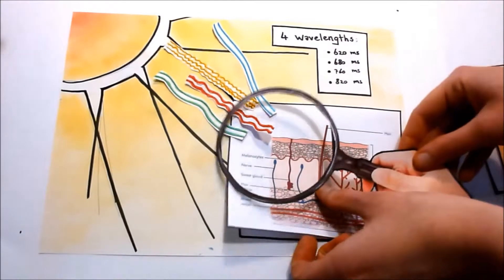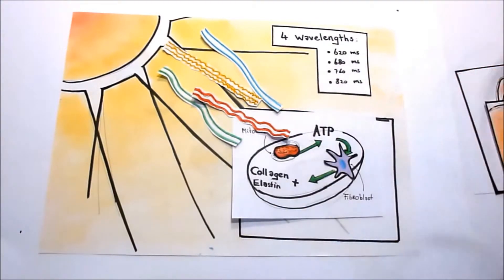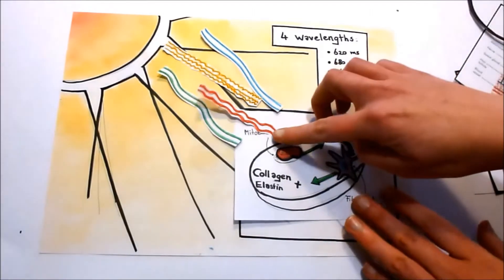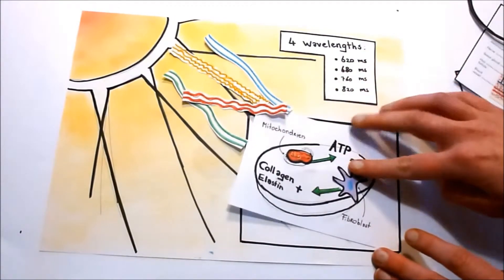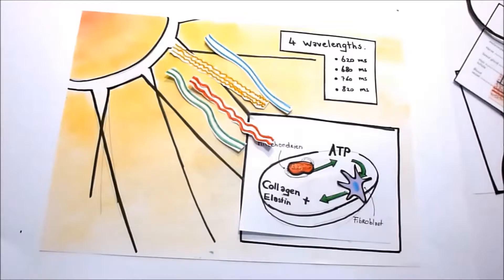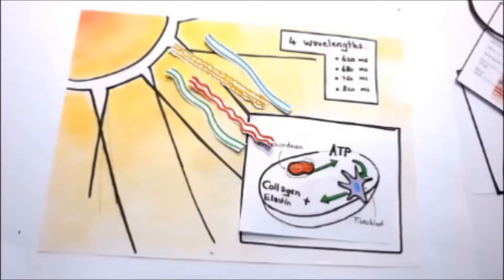When zooming to cell level, light stimulates the production of ATP, that's the energy source in cells, and that kickstarts the fibroblasts, the purple thingy in the drawing, into producing more elastin and collagen. With the right amount of light, your skin will be in the best possible condition it can be without pain.